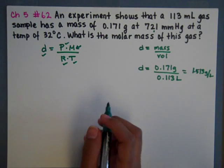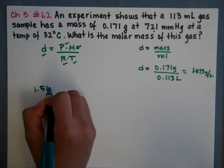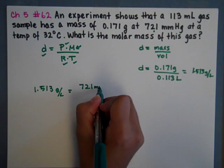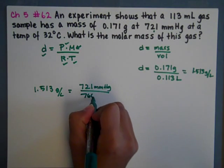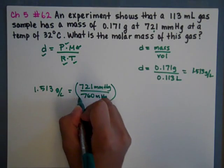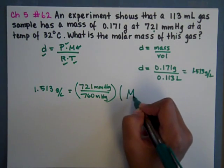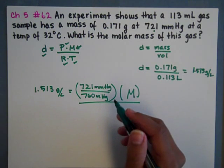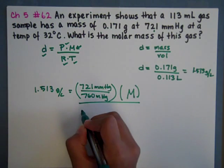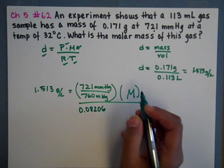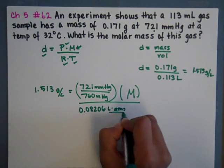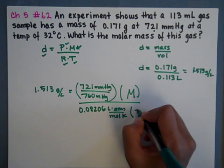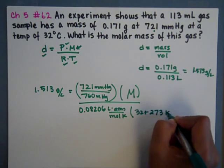Now it's just a simple plug and chug. We're going to get the 1.513 grams per liter equals a pressure. We have to convert this into atmospheres using the 760 conversion factor. We're going to solve for molar mass. And what R we're going to use is the one for PV equals nRT formulas, which is 0.08206 liters atmospheres over mole Kelvin.